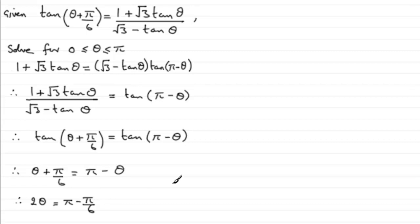So I've got, if we just come down through here, I've got that, therefore, 2 theta equals 5 sixths pi.